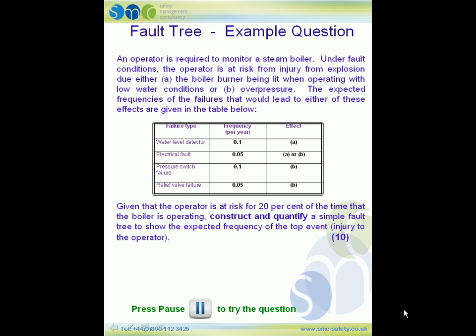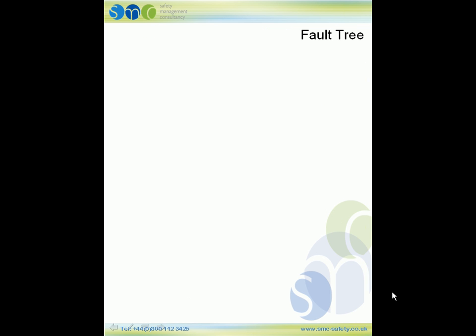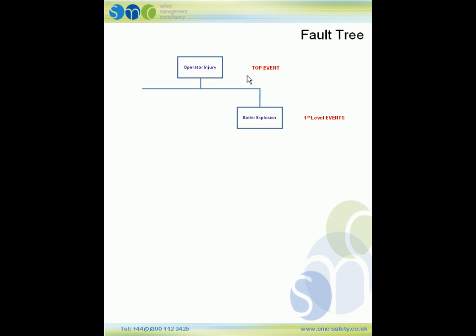Please press pause if you'd like to have a go at this question. Let's construct the fault tree. The first thing we need to do is identify the top event, which is the operator being injured. Now how can the operator be injured? We know it's due to the boiler explosion, but we also need the operator to be exposed. We need both of those conditions to happen — the operator exposed and the boiler explosion — and because of that, this is an AND gate.